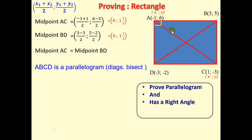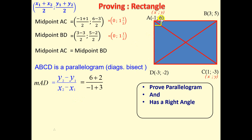So we're going to find the gradient of AD. Using the gradient formula (y2 - y1) / (x2 - x1), we have (6 - (-2)) / (-1 - (-3)), which is (6 + 2) / (-1 + 3). That gives us 8 divided by 2, which is 4. So the gradient of AD is 4.